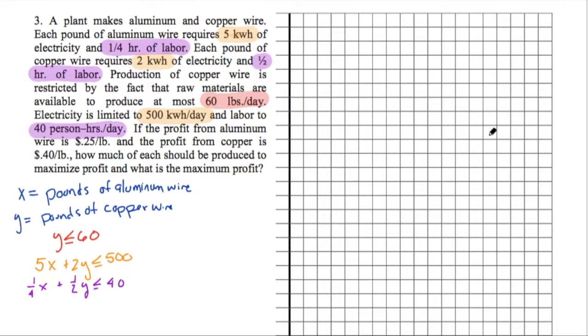And we want to first start by going ahead and thinking about what are the intercepts for those equations. So we know how to make our graph space. So for our purple equation about labor, if I made x zero, one-half y is equal to 40. So we'd get 80. And if I made y zero, a quarter is equal to 40. So we'd get 160. Okay, great. What about for our electricity equation? Well, if x was zero, we would get 250, 500 divided by 2. And if we made y zero, we would get 500 divided by 5, or 100. Great. And then we have our vertical equation in red there.